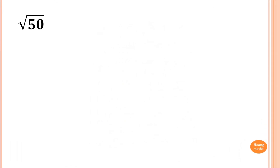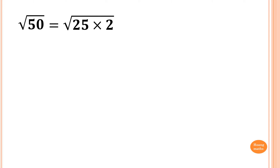Okay, let's say √50. Now what square number goes into 50? Well, 50 is 25 times 2, okay. So if you're not sure, you can draw a factor tree — so 50 is 2 times 25. This means that √50 is √(25 × 2). Square root 25 is 5, so your answer is 5√2 — because it's 2, you cannot simplify further. So 5√2.